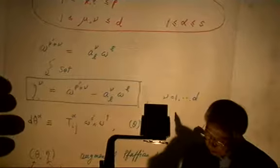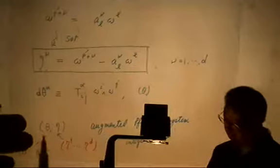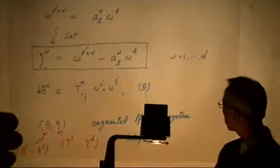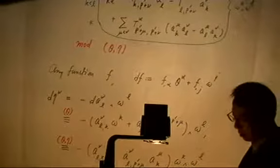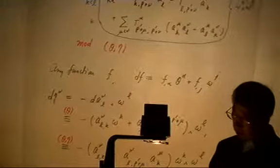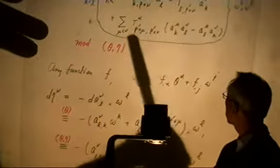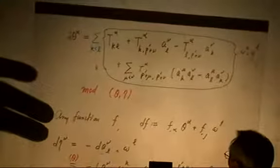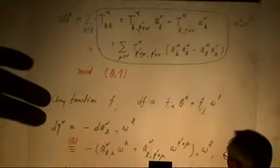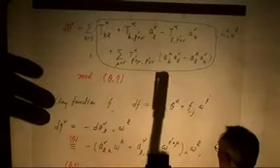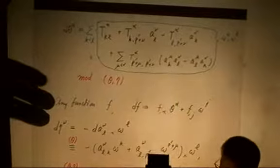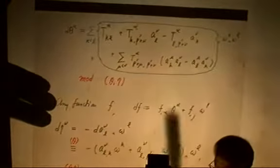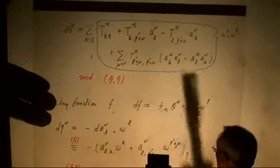Then I compute d-eta. This is the augmented Pfaffian system. I compute d-zeta and d-eta modulo zeta and eta. This is just a computation, and the coefficients modulo zeta and eta are algebraic equations on A's — the A's being what I want to find, the unknown functions. So this is a quadratic equation on A's, and there is also a first-order differential equation on A's.